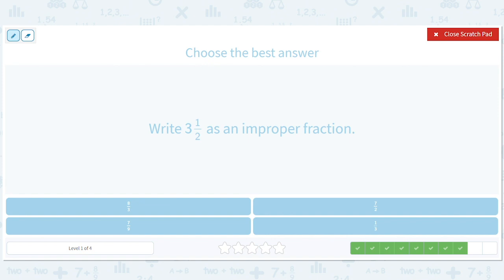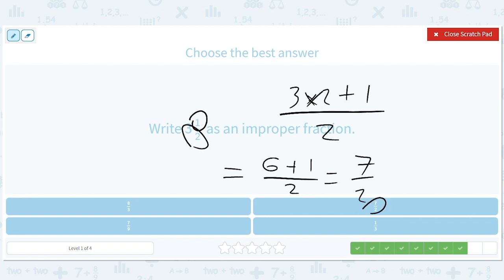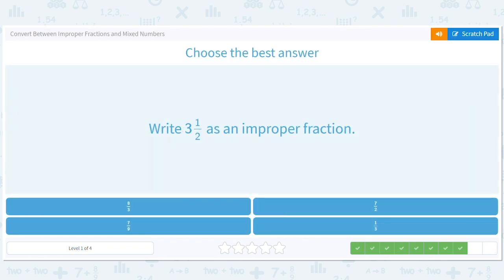Okay, how about 3 and a half as an improper fraction? So, we do 3 times 2 plus 1 all over 2. So, that's 6 plus 1 over 2 or 7 halves. Which is this one.